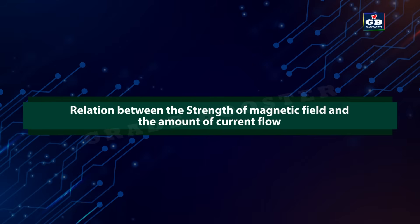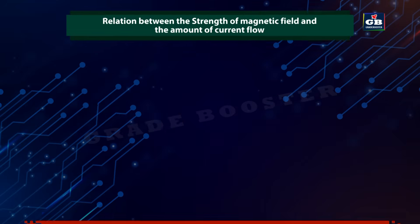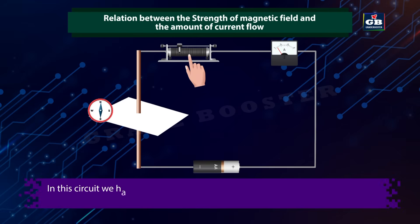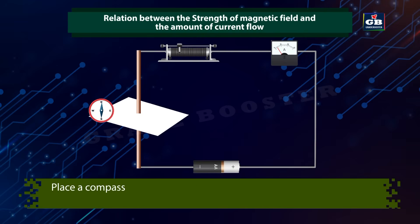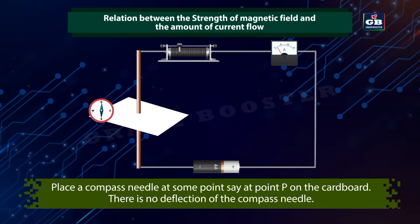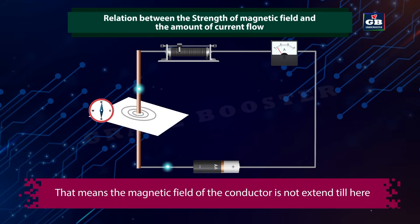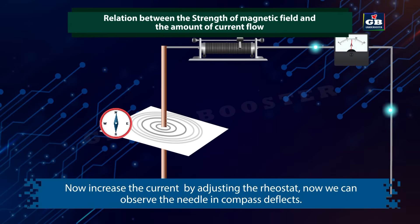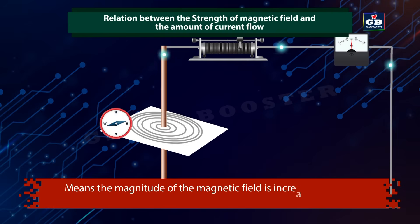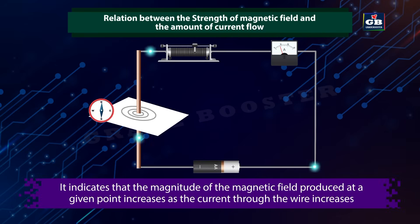Relation between the strength of magnetic field and the amount of current flow. Arrange the conductor and circuit as shown. In this circuit, we have a rheostat to increase and decrease the current flow and an ammeter to know the value of the current. Place a compass needle at some point, say point P on the cardboard — there is no deflection of the compass needle, meaning the magnetic field of the conductor does not extend that far. Now increase the current by adjusting the rheostat, and we can observe that the needle deflects. This indicates that the magnitude of the magnetic field produced at a given point increases as the current through the wire increases.